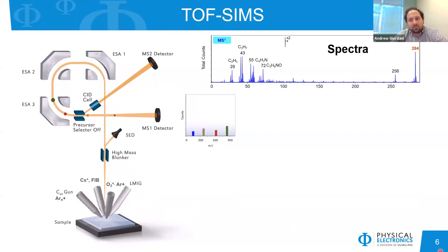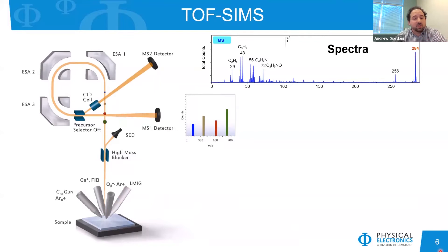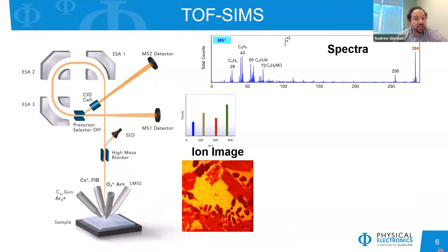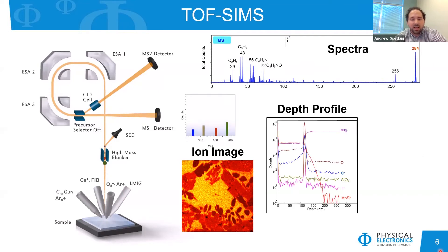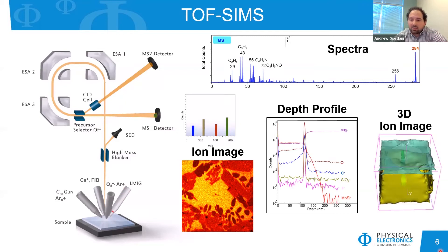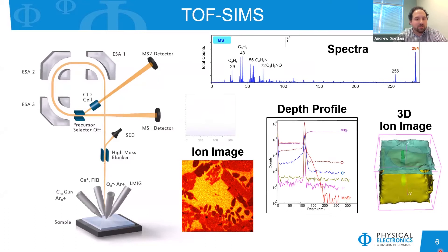From TOF-SIMS you can get surface spectra with good speciation of what's on your sample surface — both molecular and elemental information. You can also get ion images, since a mass spectrum is generated at every XY pixel as the analysis beam rasters over the surface, allowing you to see spatial distributions. You can do depth profiling to monitor species as a function of depth. All this information is stored, so you can reconstruct 3D images showing how species are spatially distributed in depth as well as in X and Y.